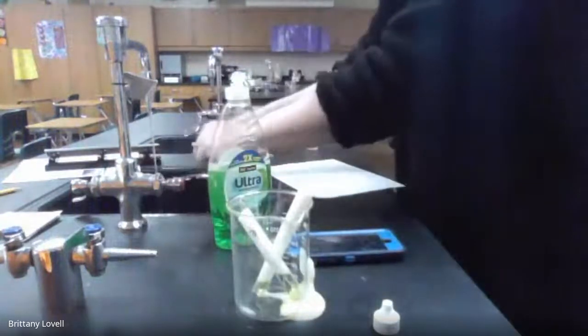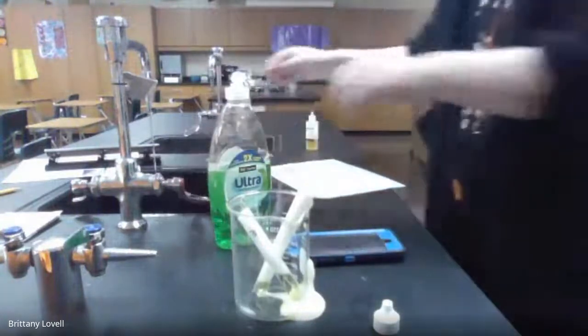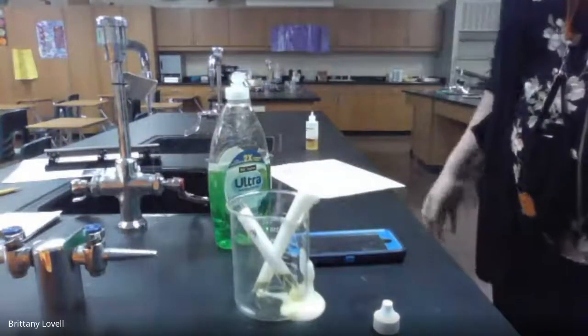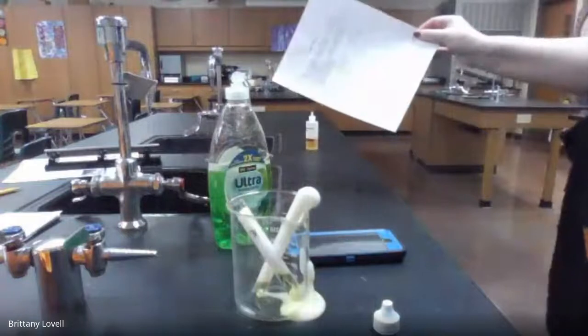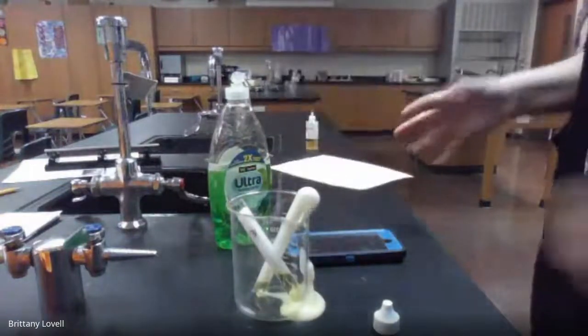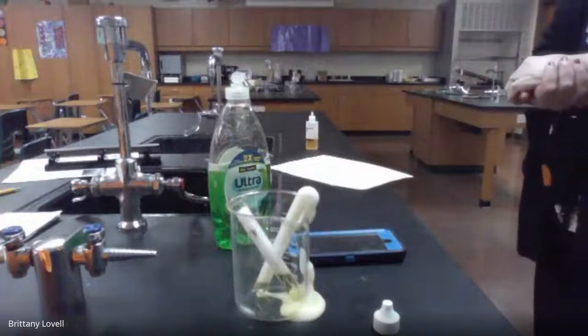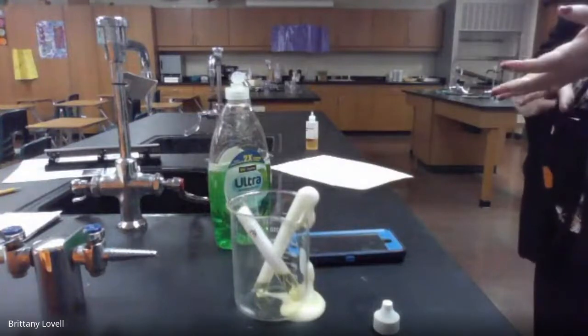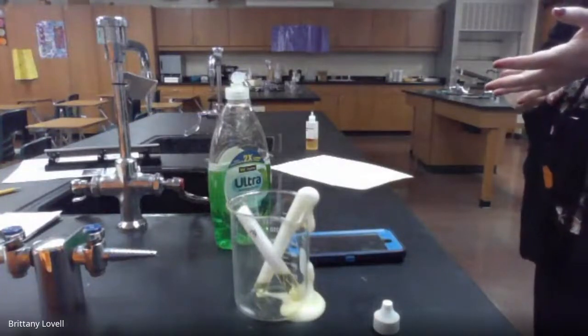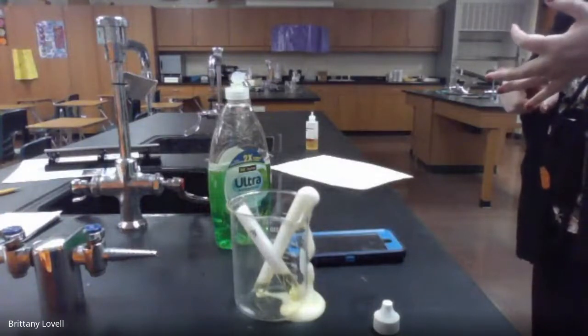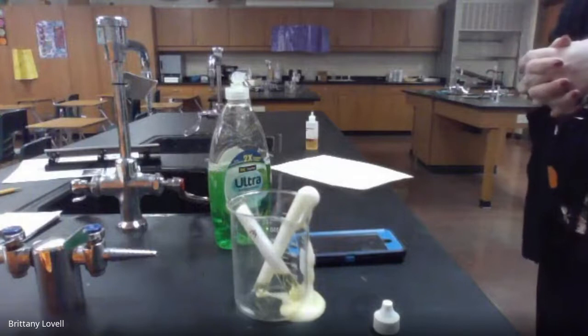So you're just going to go ahead and answer the last three questions under observations now that we've done that experiment. Okay, and this is what you're going to get turned in for today. All right, and be thinking about out of all these chemicals here, so we started with hydrogen peroxide and dish soap, and then we added in some potassium iodide. Which one do you think was the catalyst in the reaction?